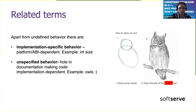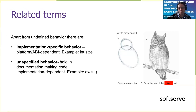There's also unspecified behavior, which is a hole in documentation making our code fully dependent on our implementation — like a compiler. A nice motivational example is like drawing a hole: the documentation doesn't say anything about drawing the hole, so you cannot make any assumption that something happened or that no side effect happened at all. But these two things are not undefined behavior per se.